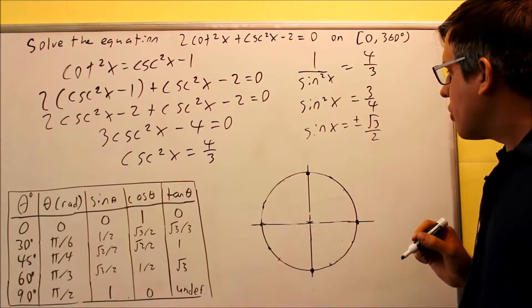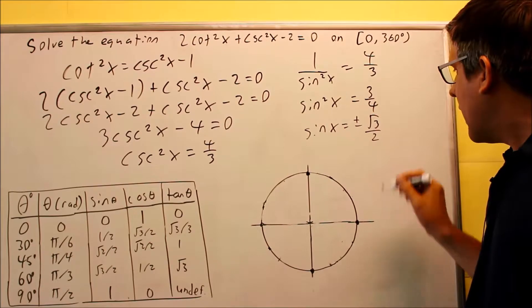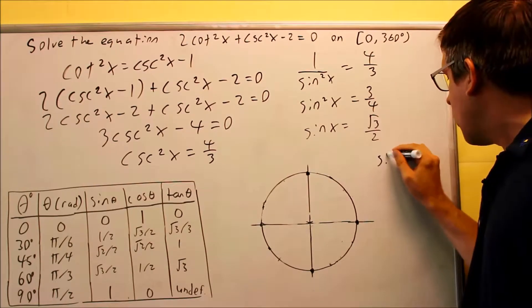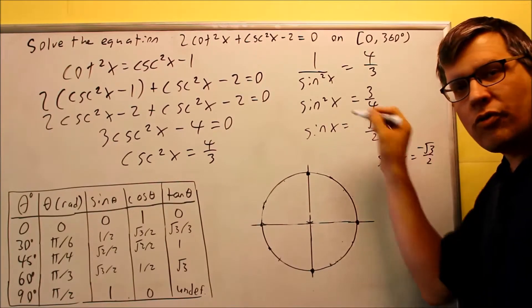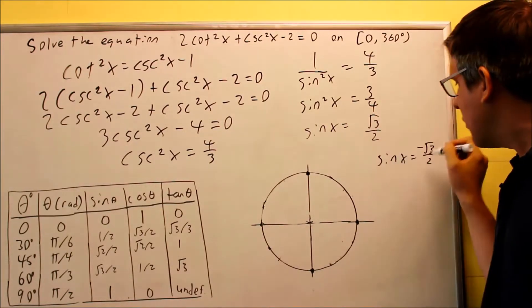I need to look at two situations. I have to look at one where I have the positive version and then also I want to solve this equation negative square root of 3 over 2 as well. I have two different ones I want to solve for the positive and the negative one.